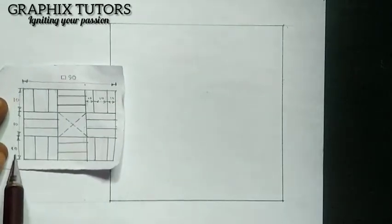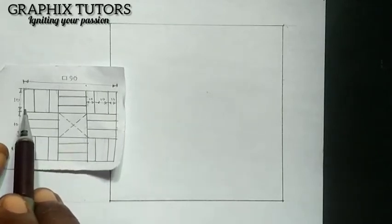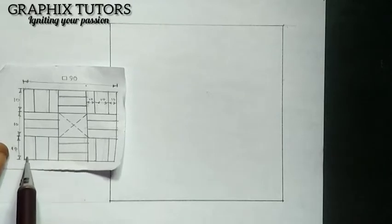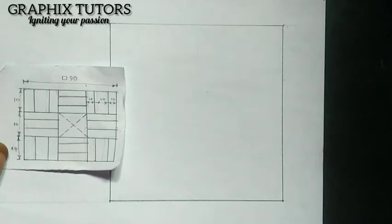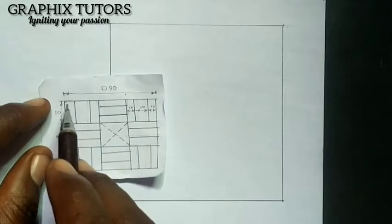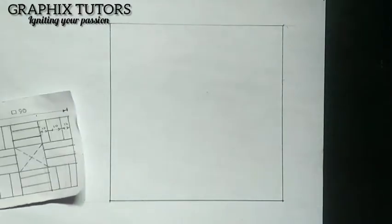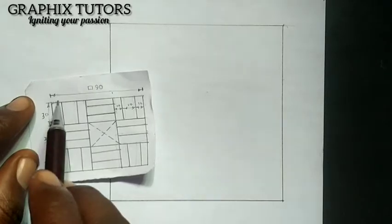The next thing: if you look at this, it's telling me each side is divided into three equal parts — that means from here to here is 10, from here to here is 10, from here to here is 10. So I'm going to divide 90 by 3, which gives me 30 millimeters each. So I'm having 30, 30, 30 — correcting it, it is 30, not 10, because it is divided into three equal parts.